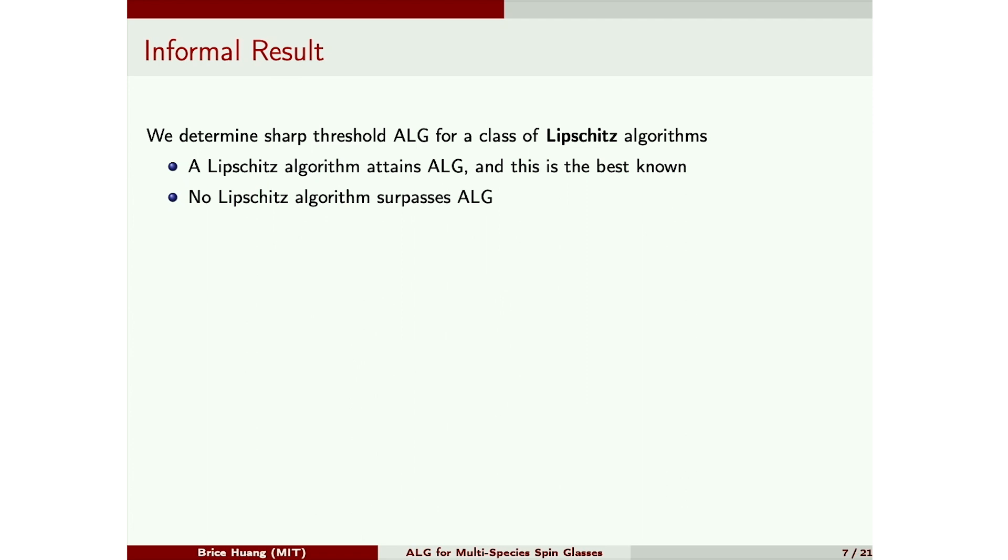Our main result will be a computational threshold for this problem, for a class of Lipschitz algorithms. So here we're thinking of an algorithm as a map from the disorder Gaussians to R to the N, and we're asking that this map is suitably Lipschitz. So this class of algorithms includes the best algorithm we know for this problem. And we showed that no Lipschitz algorithm can surpass this value alg. Our result also holds for a yet more general model of multi-species spin glasses, which we'll cover towards the end.